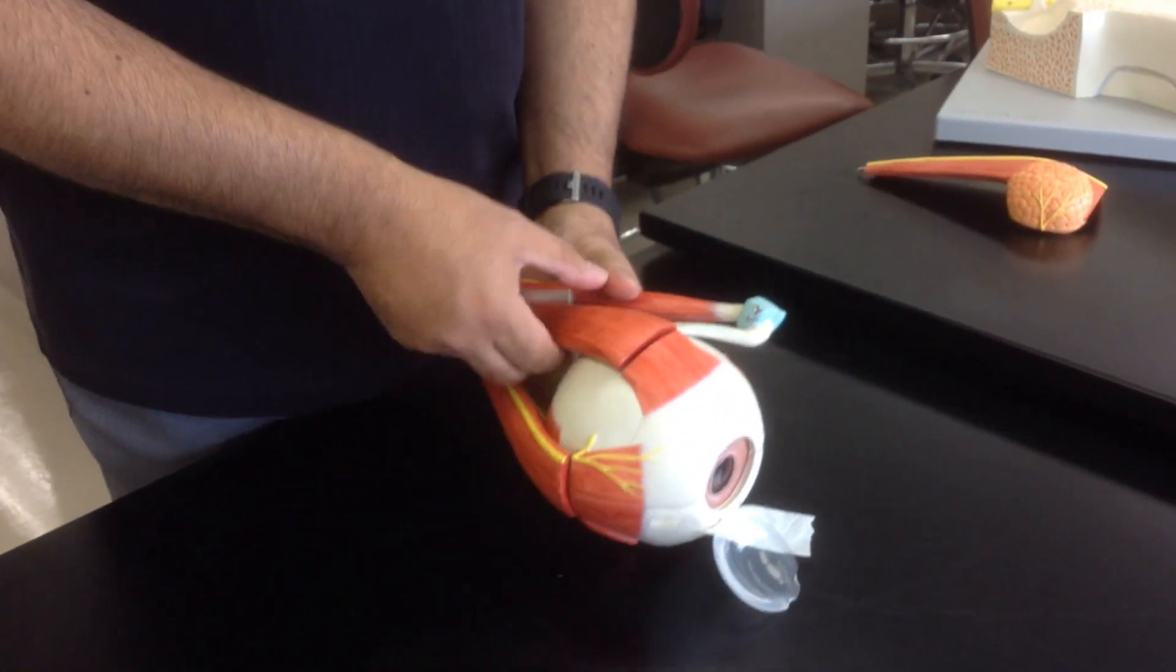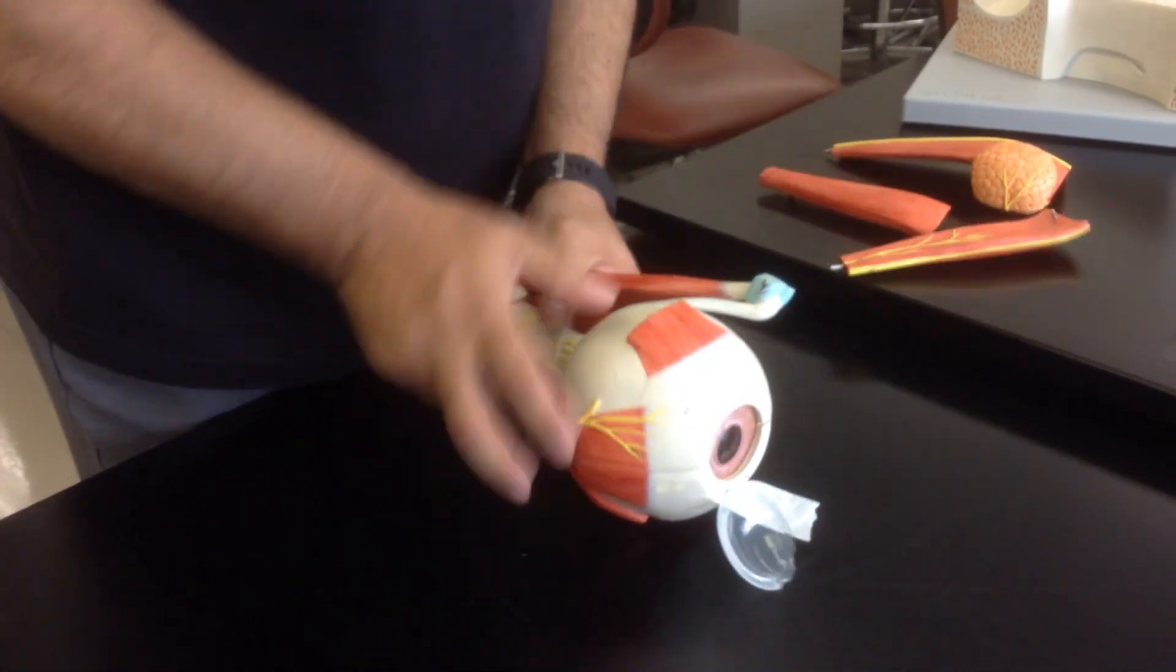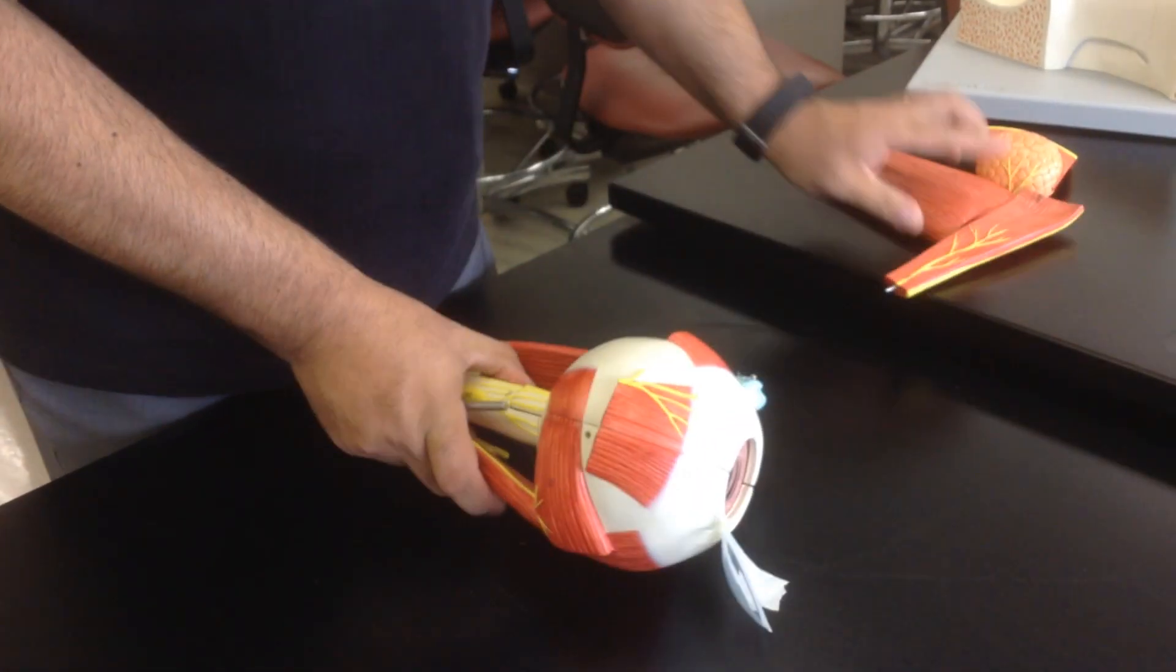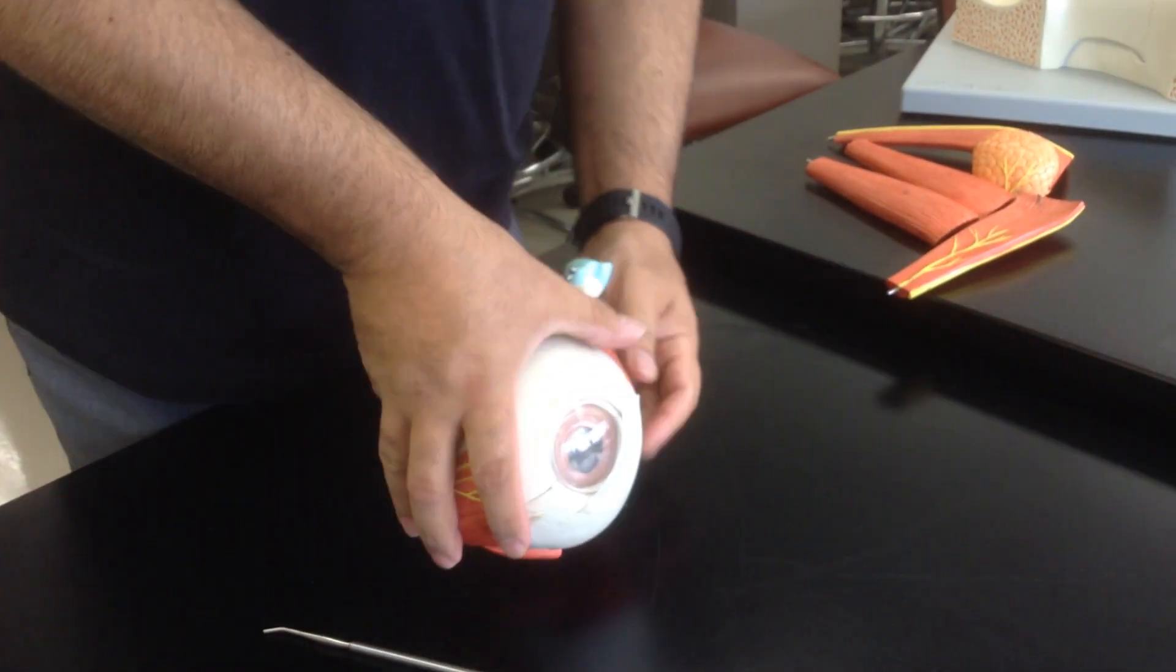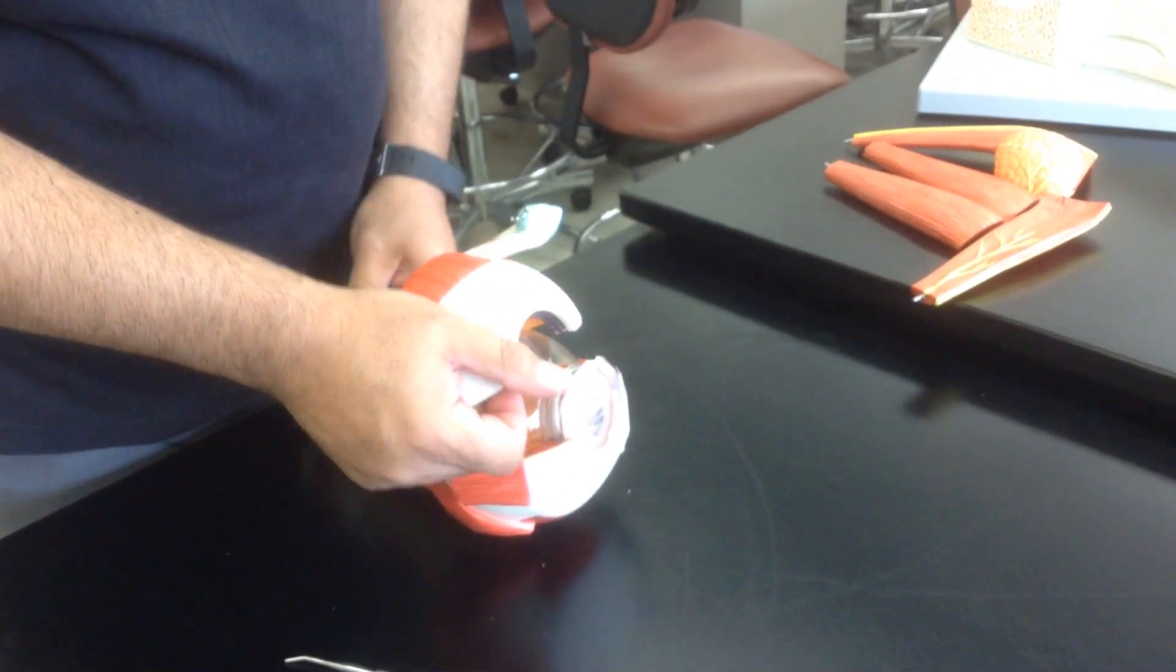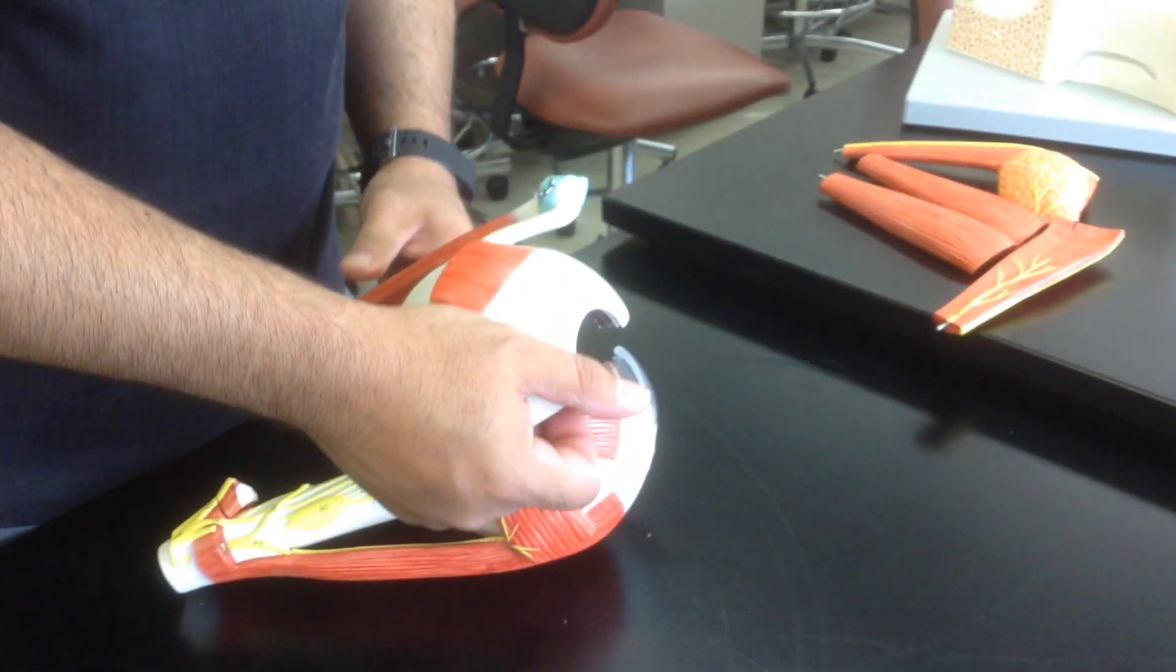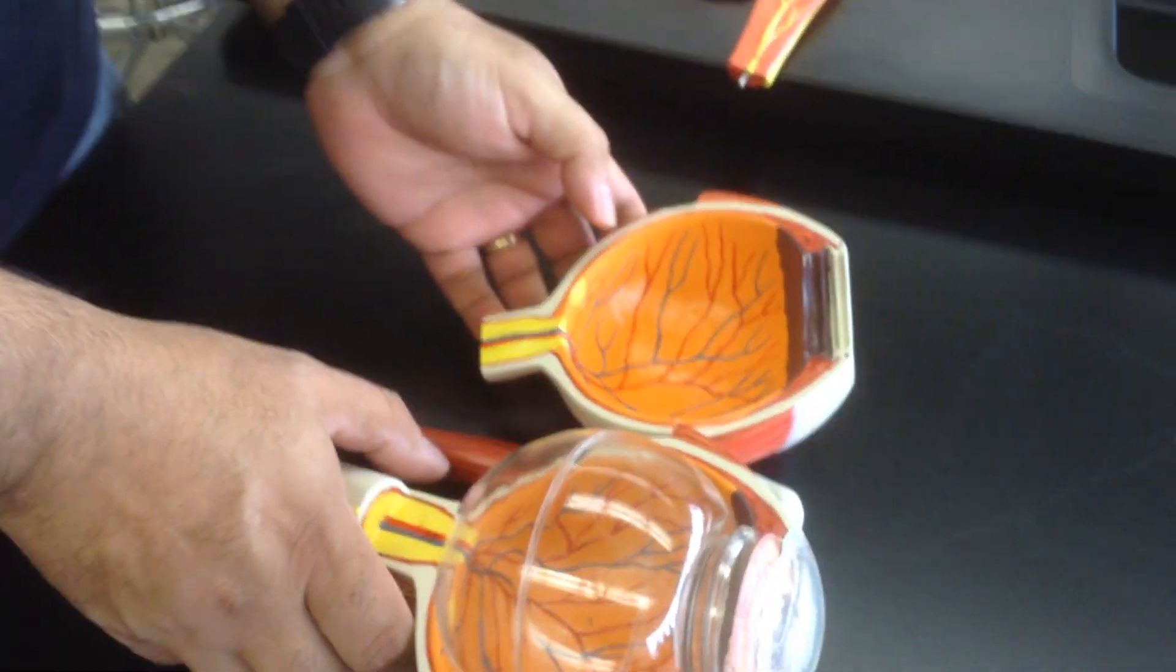First, we have to remove these muscles, so it makes it easier for me to be able to open this and talk to you guys about it. So when I open this eye, you can see the internal parts now.